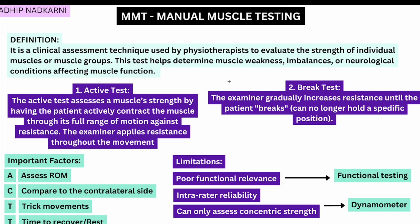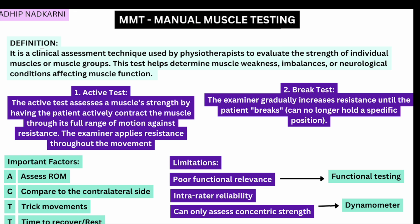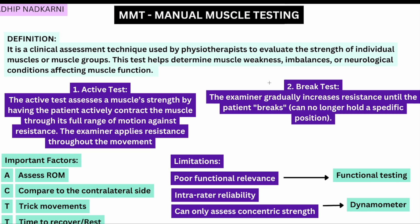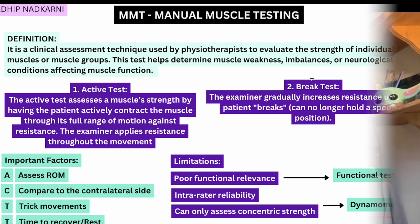We will discuss in detail the modified MRC grading system. To begin with the definition: manual muscle testing is a clinical assessment technique which evaluates the strength of an individual muscle or a muscle group. This test helps to determine muscle weakness, imbalances, or neurological conditions affecting muscle function.